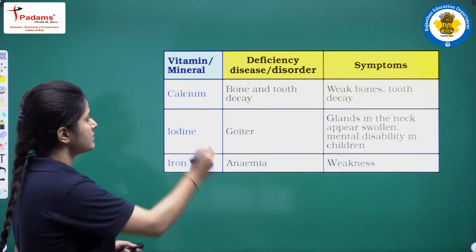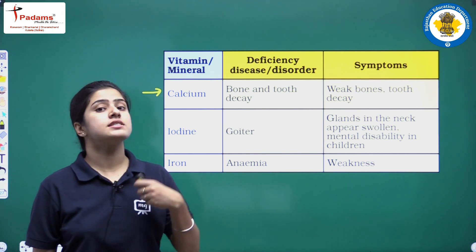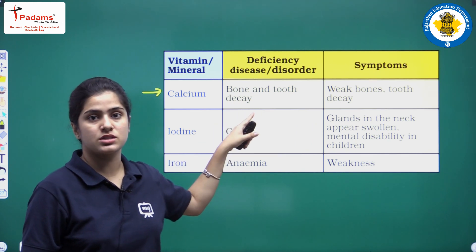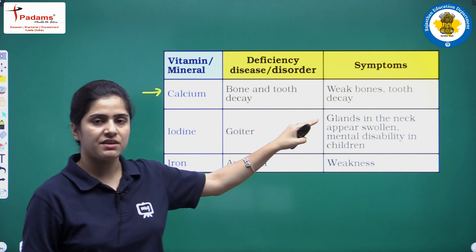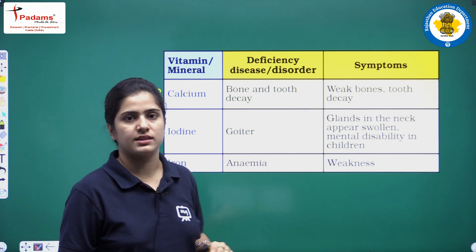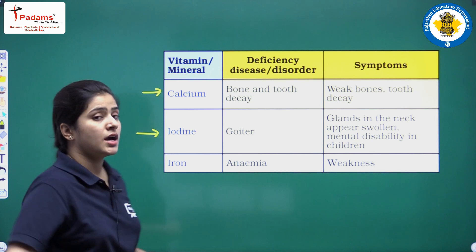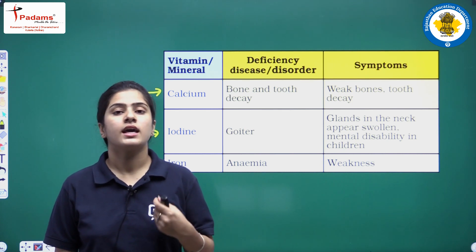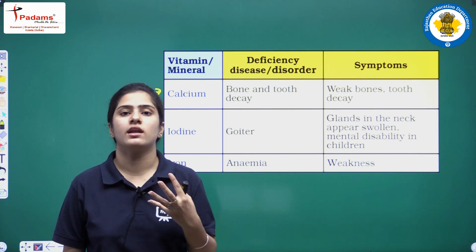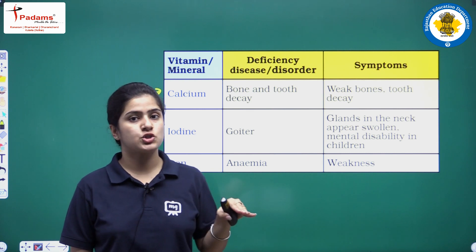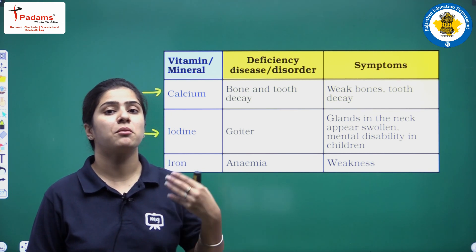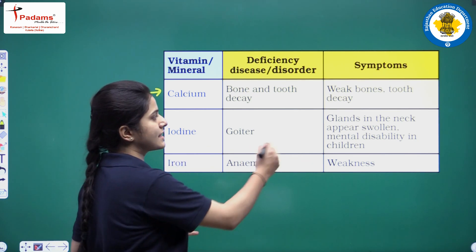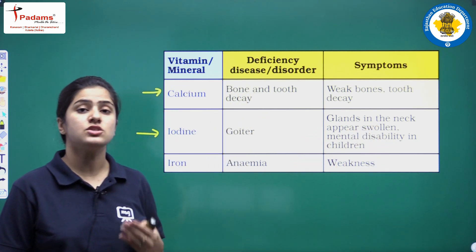Next is calcium. Because of the deficiency of the mineral calcium, your bones will become very weak. The next mineral is iodine — its deficiency causes a disease called goitre, in which the neck gland becomes swollen. In children, iodine deficiency can also cause mental disability.